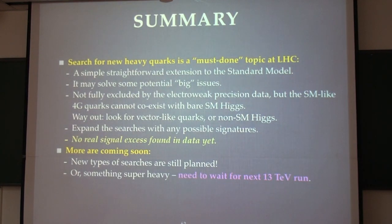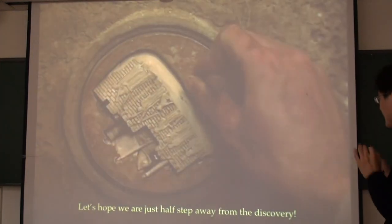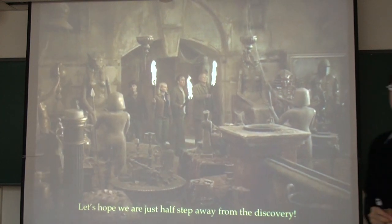Let me summarize. I would say searching for new quarks is almost a must-do topic at LHC. It's a simple extension and they solve some big issues. We know they are not compatible with the pure Standard Model Higgs. What we're doing now is that we either extend the search to different things or look for whatever we can see. But so far, no real signal excess, and the limit is around 800 GeV. There are a few words to comment. There are more coming - a few more new types of searches are still planned. And if we want to look for something super heavy, like 800 GeV, we probably need to wait for 13 TeV run. So let's hope we are just a little bit away from the discovery. Let me put a little movie here to end my talk today. Thank you very much.